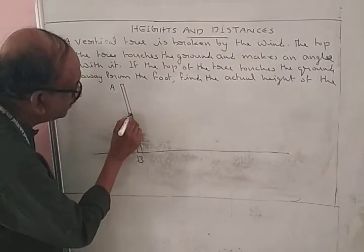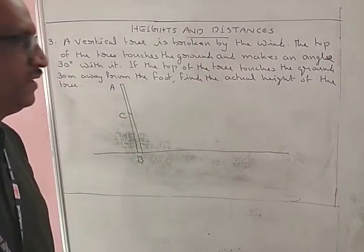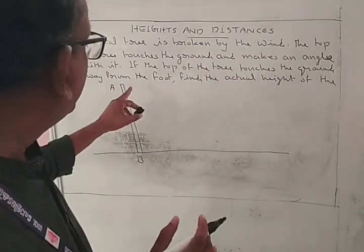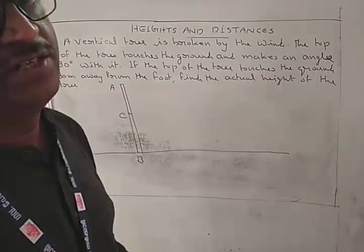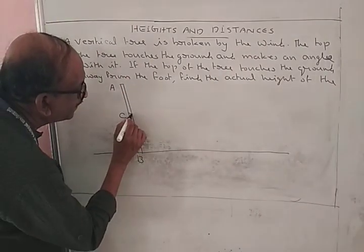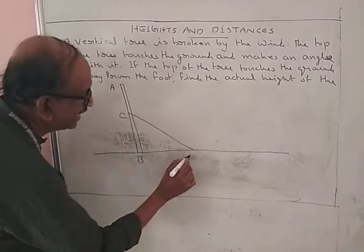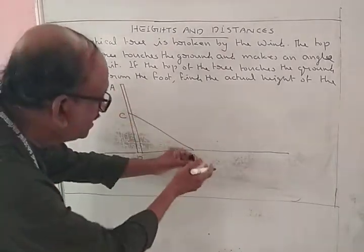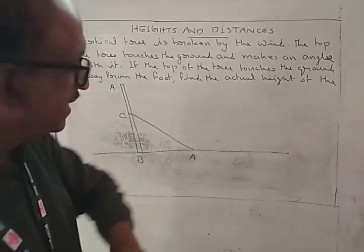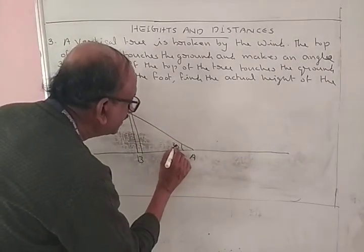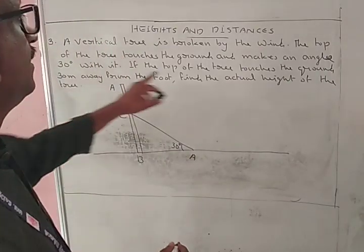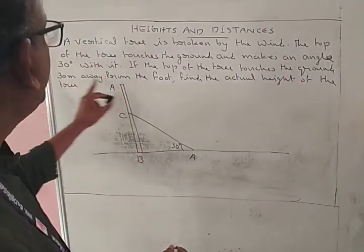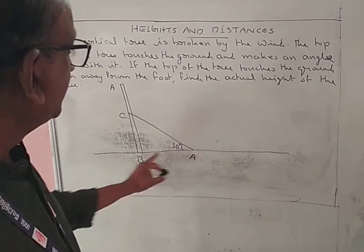The tree is broken by the wind at point C. The top of the tree is A, which touches the ground. Therefore the top portion AC touches the ground and makes an angle of 30 degrees. The top of the tree, A, touches the ground 30 meters away from the foot B. Therefore this distance AB is 30 meters.